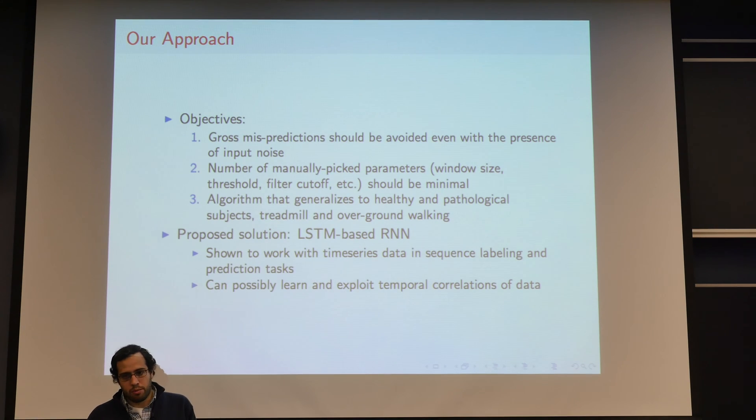So our approach, what we wanted to get is a system that from motion data would get us the events. We wanted, of course, to avoid gross mispredictions of the events. We wanted also to keep from having too many manually picked parameters, which is usually the state of the art, based on heuristics that say, okay, you do this type of detection, you put this parameter here, this parameter here, set at this, and this returns reasonable events.